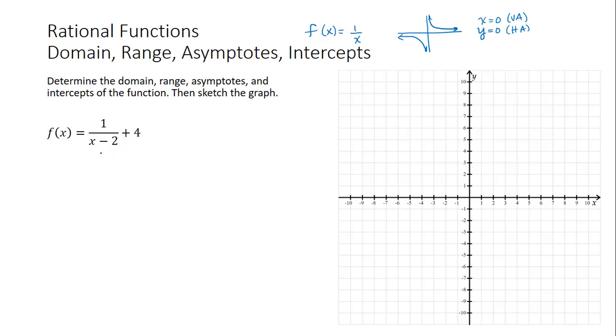So this function 1 divided by x minus 2 plus 4, recall that the change to x tells us how the function is going to shift left or right, and then the outside change is how it shifts up or down.